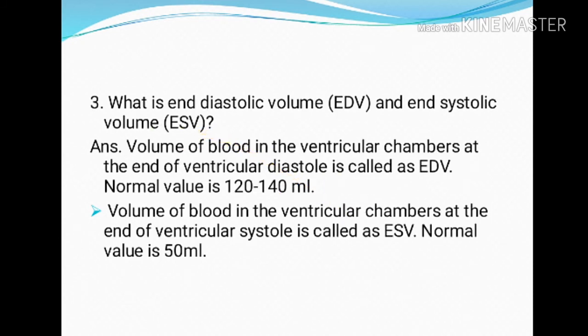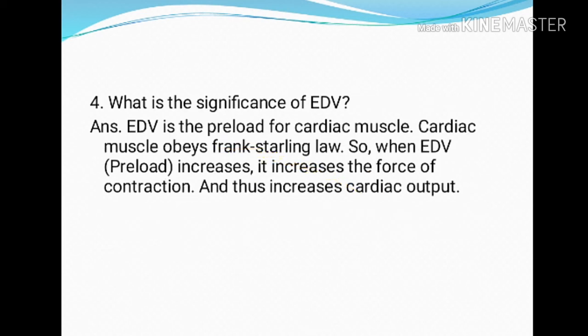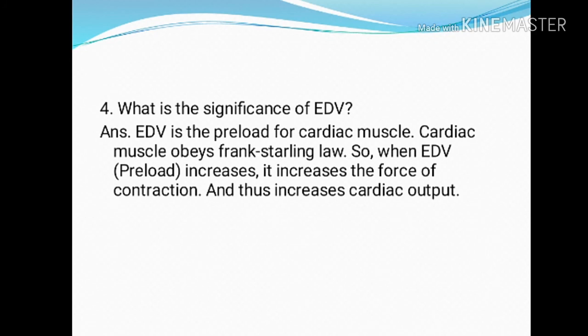What is end diastolic volume and end systolic volume? Volume of blood in the ventricular chambers at the end of ventricular diastole is called end diastolic volume, with a normal value of about 120 to 140 ml. Volume of blood at the end of ventricular systole is called end systolic volume, with a normal value of about 50 ml. End diastolic volume is the preload for cardiac muscle. Cardiac muscle obeys the Frank-Starling law, so when end diastolic volume increases, it increases the force of contraction and thus increases cardiac output. Thank you.